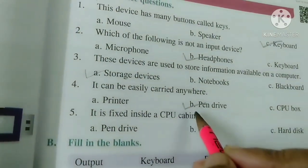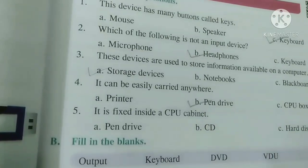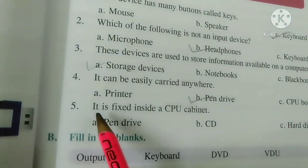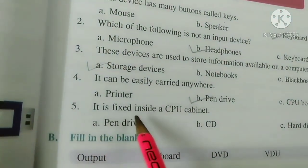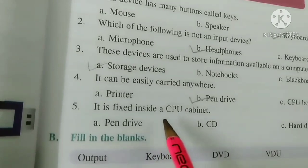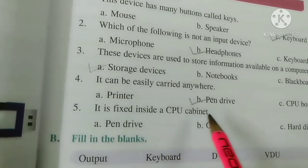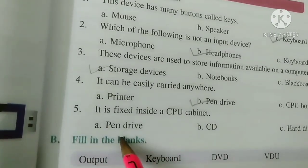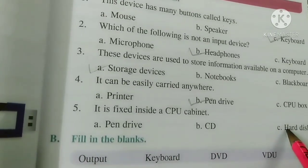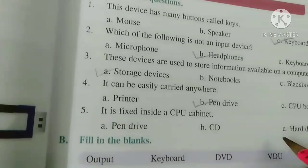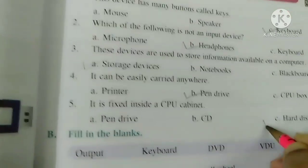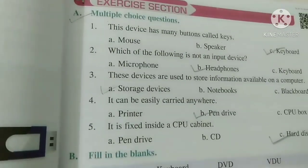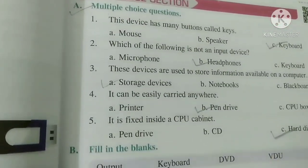Pen drive is a small storage device that we can carry. Number 5: it is fixed inside a CPU cabinet. Options are pen drive, CD, and hard disk. The answer is hard disk. Children, you will all do this work in your book.